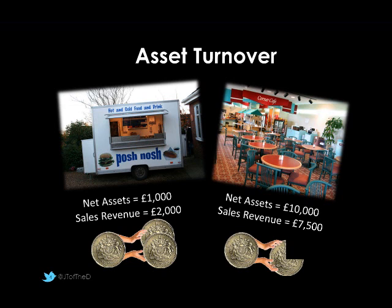Our restaurant, however, for every pound invested — our £10,000 — has only generated three quarters of a pound, so £10,000 generates £7,500. We can see that asset turnover is better from the burger van. If we scale them up to £10,000 in both, the burger van should produce sales revenue of £20,000, which is obviously far better than £7,500 from our cafe. Asset turnover is comparing what assets we put in and the sales produced from this.